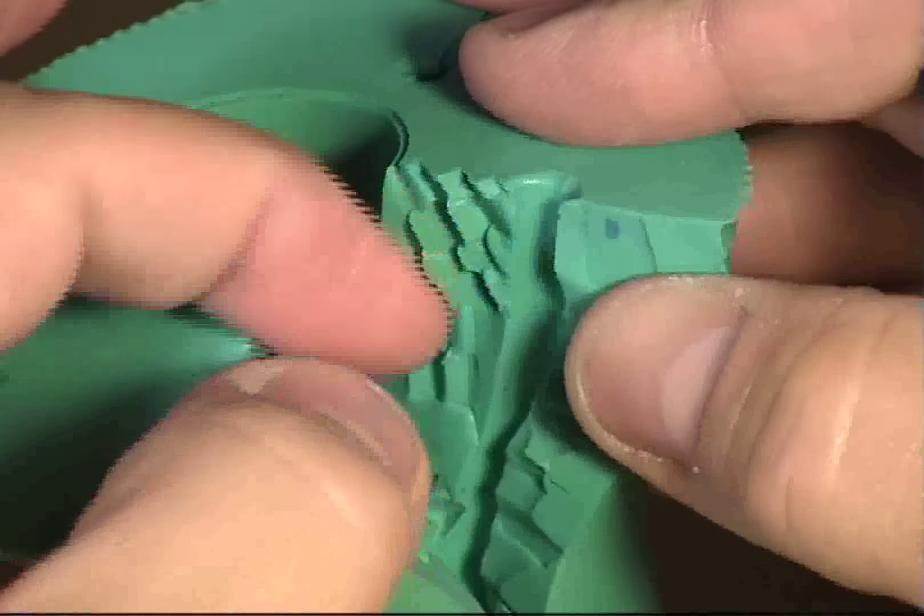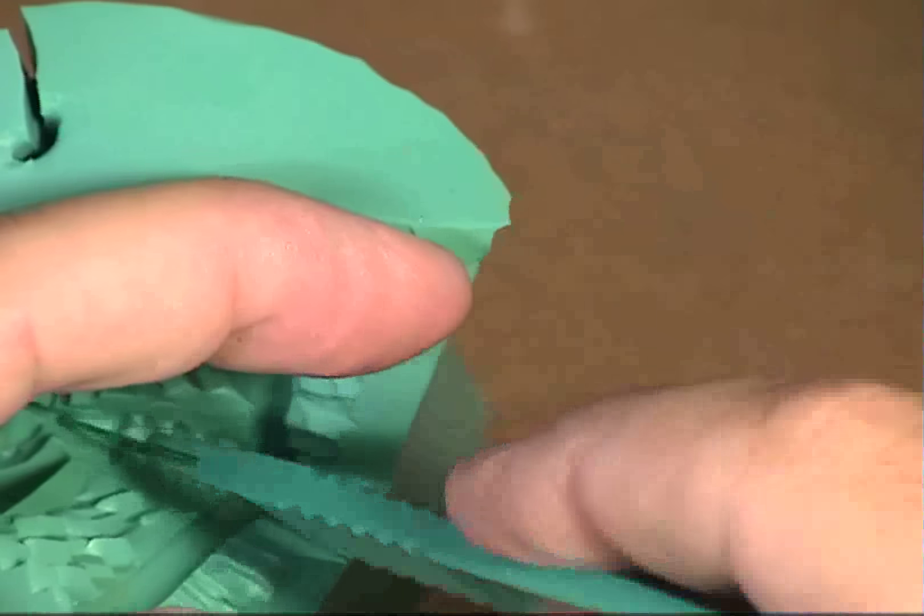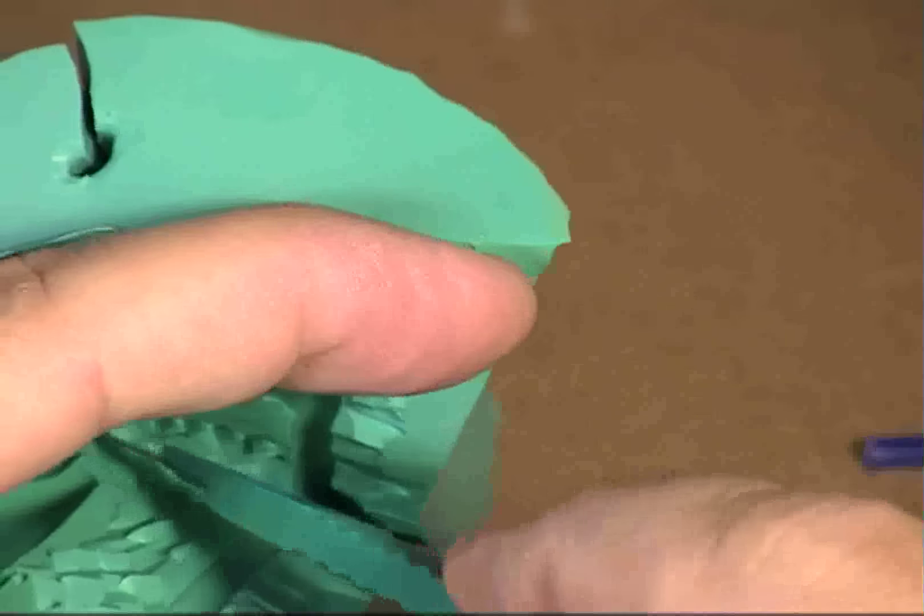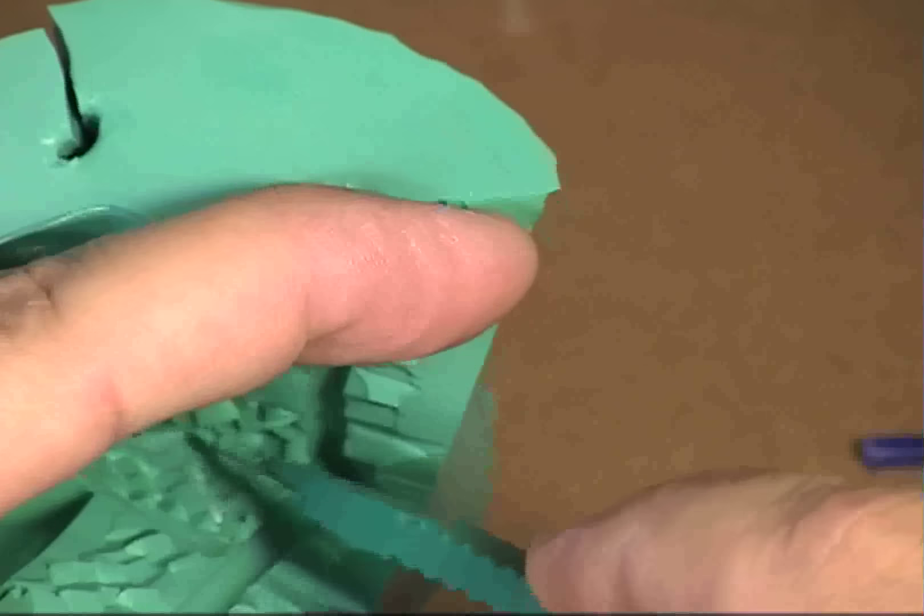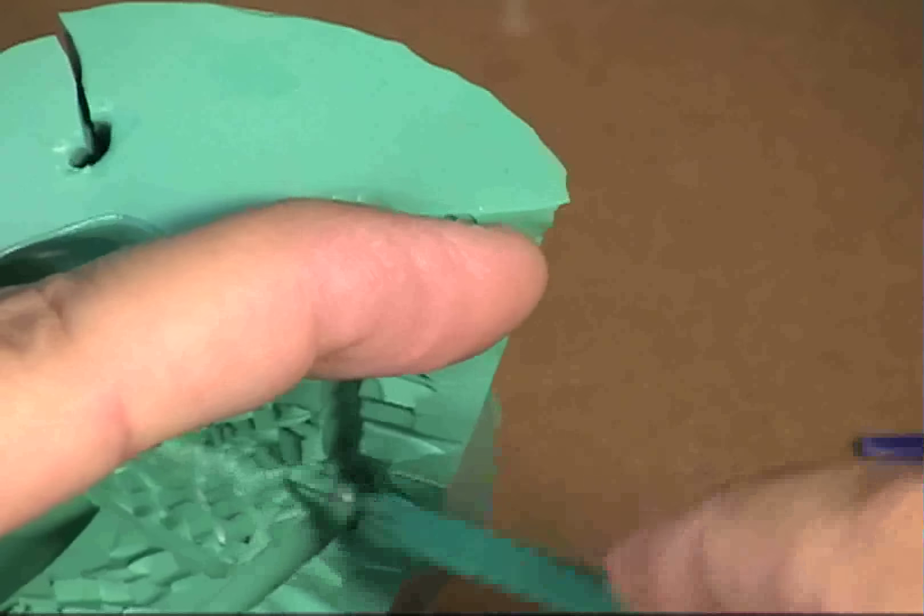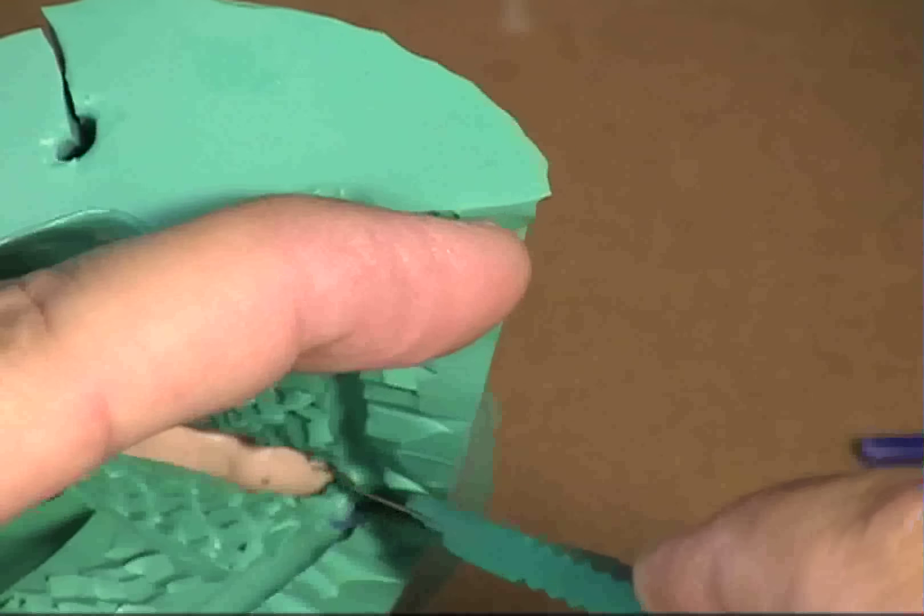Now that the silicone is cured, start slicing your mold apart using a zigzag pattern with your scalpel or Xacto knife. Be very careful when you get to your actual sculpture not to cut it.